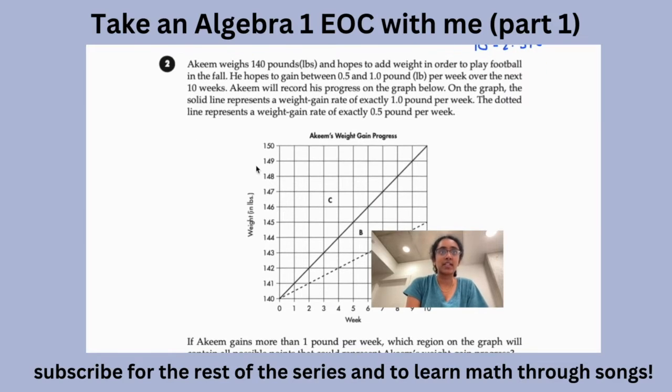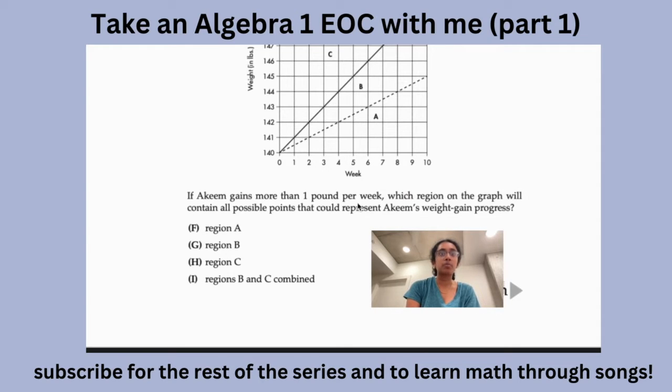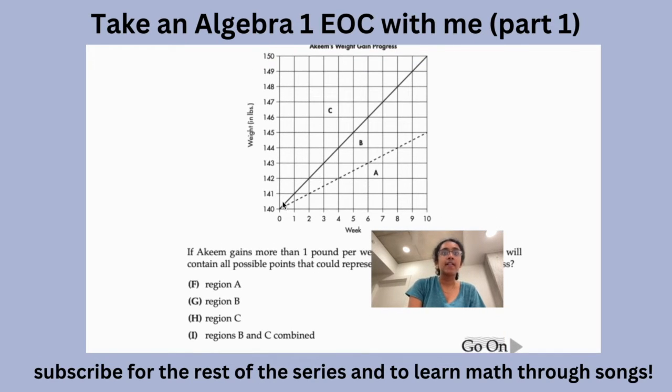Now let's move on to the next question. Akeem weighs 140 pounds and hopes to add weight in order to play football. He hopes to gain between 0.5 to a pound per week over the next 10 weeks. Akeem will record his progress on the graph below. On the graph the solid line represents a weight gain rate of exactly 1 pound per week. The dotted line represents a weight gain of exactly 0.5 pounds a week. So if Akeem gains more than 1 pound a week which region on the graph will contain all possible points that could represent Akeem's weight gain progress?